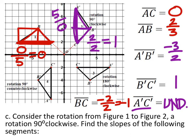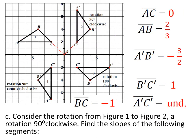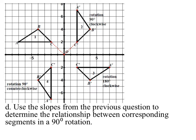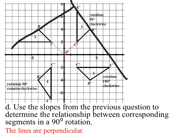This is a nice principle to remember: when rotating 90 degrees, corresponding line segments of the image and pre-image will have opposite reciprocal slopes because of the 90-degree rotation. These lines would be perpendicular — meaning if we extended A prime B prime and AB, we would get a 90-degree angle.